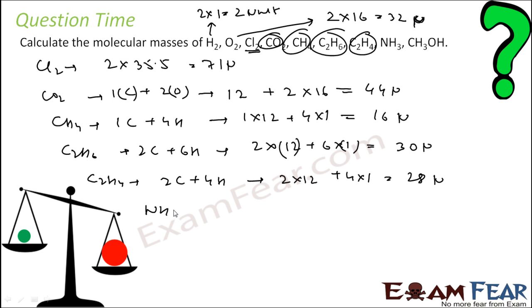C2H4. Two carbon plus four hydrogen. Solve this. Two into 12 plus four into one. 28 units. NH3. Nitrogen is 14. Hydrogen, three hydrogen, three. 14 plus three is 17 unit.